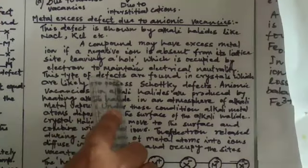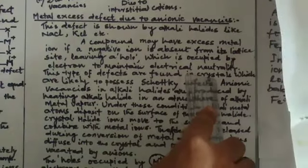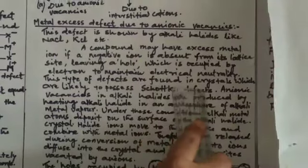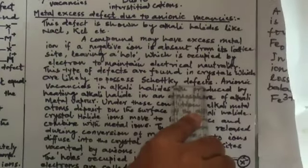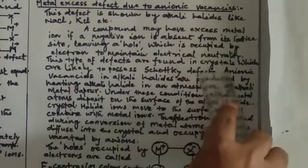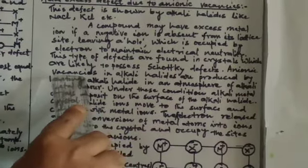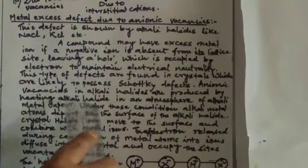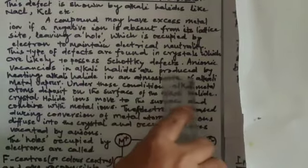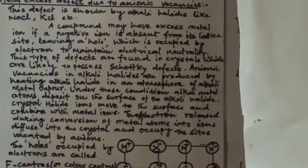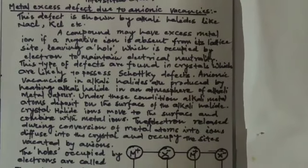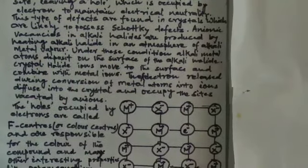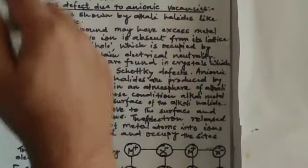This type of defect is found in crystals which are likely to possess Schottky defects, like NaCl, KCl, etc. Anionic vacancies in alkali halides are produced by heating alkali halide in an atmosphere of alkali metal vapour. When NaCl crystal is heated in the presence of sodium metal vapour, the metal excess defect due to anionic vacancy will be produced.